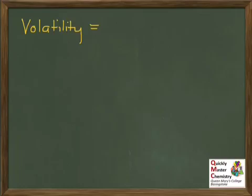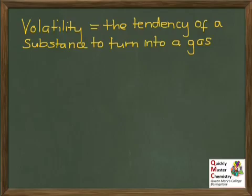Let's look at the word volatility. It's a word that's used in everyday English, but not in a way that meshes very well with its chemistry meaning. If you were to say a substance was volatile, the average person might think that you mean it's very reactive or even explosive, but that's actually not what we mean in chemistry. Simply, volatility is the tendency of a substance to turn into a gas — how readily it evaporates.